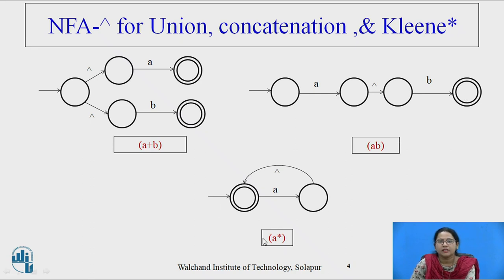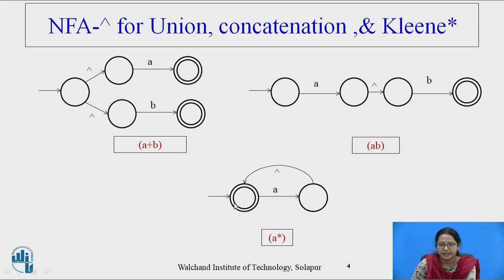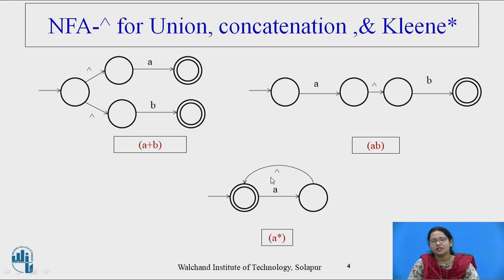The initial state of machine A remains as the initial state of the combined A,B machine, and the final state of machine B is the only final state of machine A,B. For A*, we add one new initial state, the original final state is connected to this new initial state with a null transition, and the new initial state also acts as a final state.